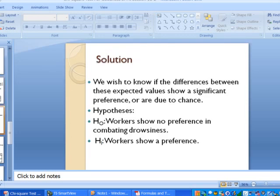Well, let's start out and write the hypotheses. First, the null hypothesis would be that workers show no preference in combating drowsiness, and that's our claim for this problem here. The alternative hypothesis would be that workers do show a preference of some sort. We're not saying what that preference is. We're just saying that they do show a preference. Now, notice one thing we're doing differently here. We're writing the hypotheses as a sentence in a narrative form. That's quite all right when we talk about these chi-square tests for goodness of fit.